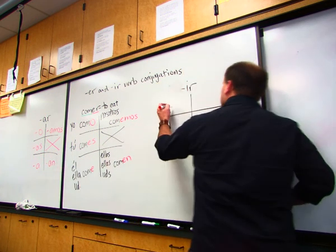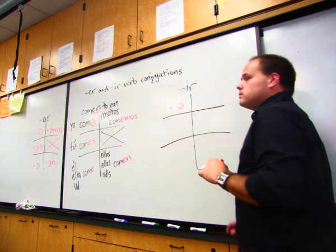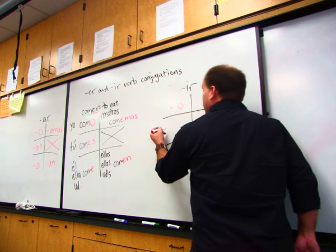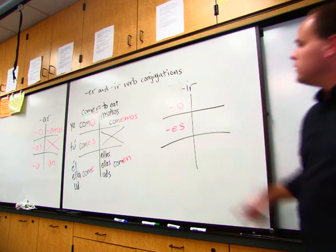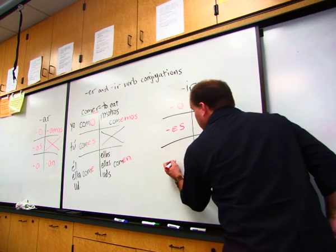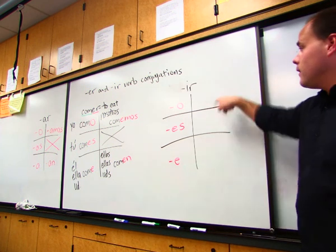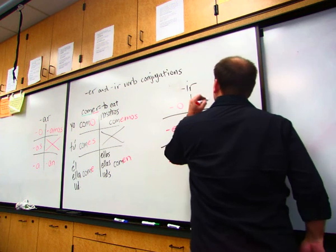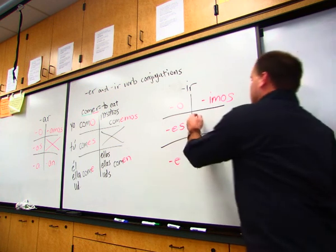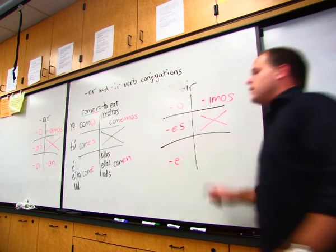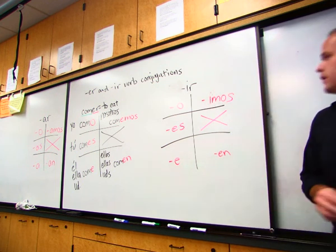In the yo form you drop the IR and you add O. In the tu form you drop the IR and add ES. In the el, ella, usted form you drop the IR and you add E. In the nosotros form you drop the IR and add IMOS. Ellos, ellas, ustedes form, you drop the IR and add EN.